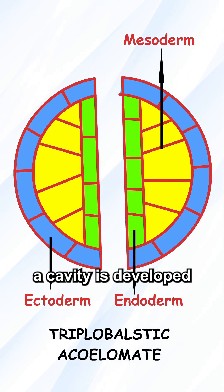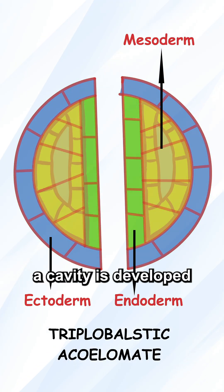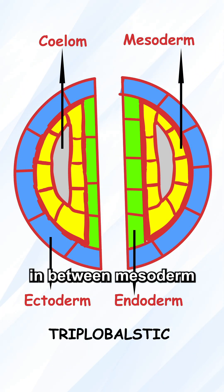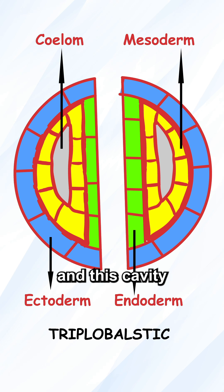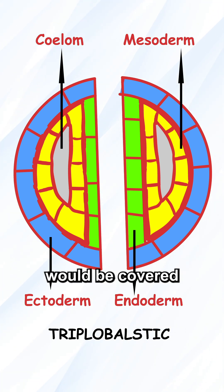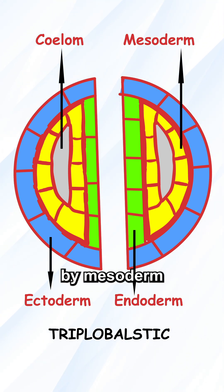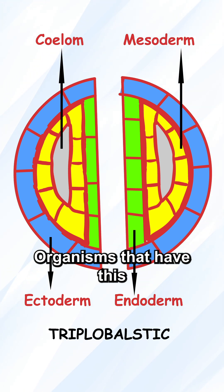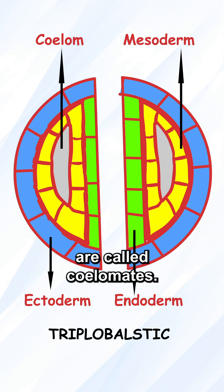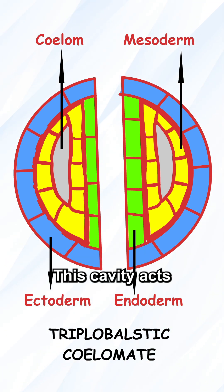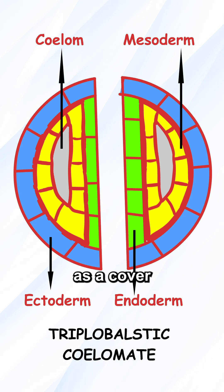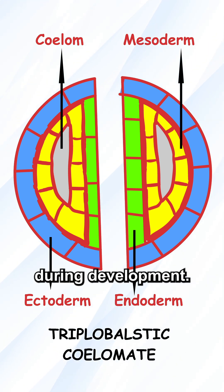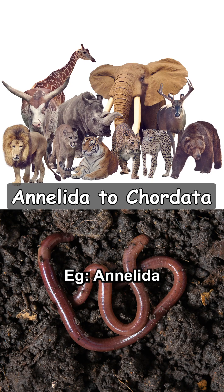But in some organisms, a cavity is formed in between the mesoderm, and this cavity is called the coelom. This coelom is covered by mesoderm on all sides. Organisms that have this are called coelomates. This cavity acts as a cover for internal organs during development.